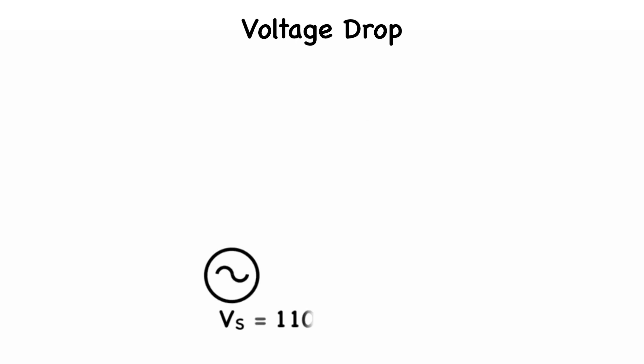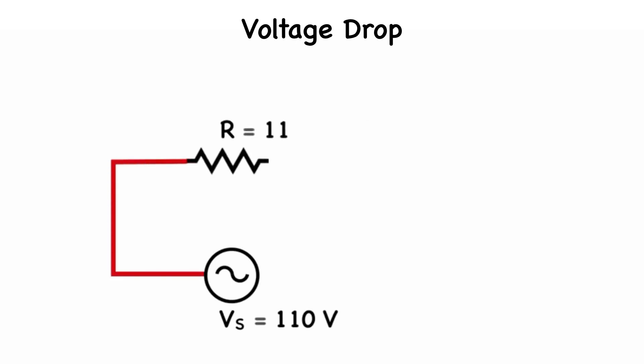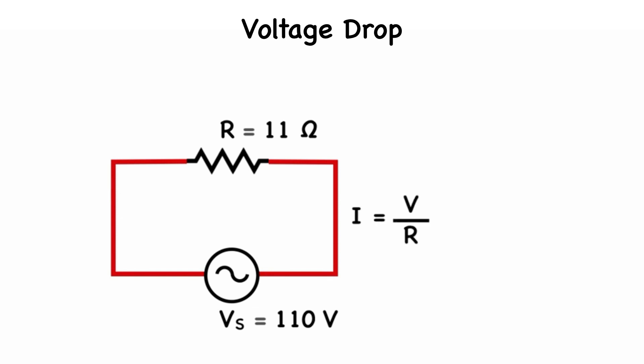In order to understand voltage drop, let's consider the simple circuit in this diagram. A voltage source of 110 volts AC is connected to a load resistor of 11 ohms. According to Ohm's law, the current that will be drawn by the load will be equal to the voltage divided by the resistance, which in this case will be 10 amps.